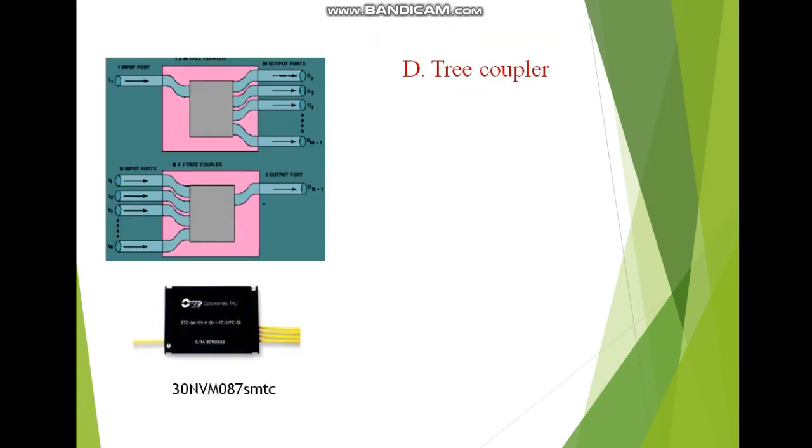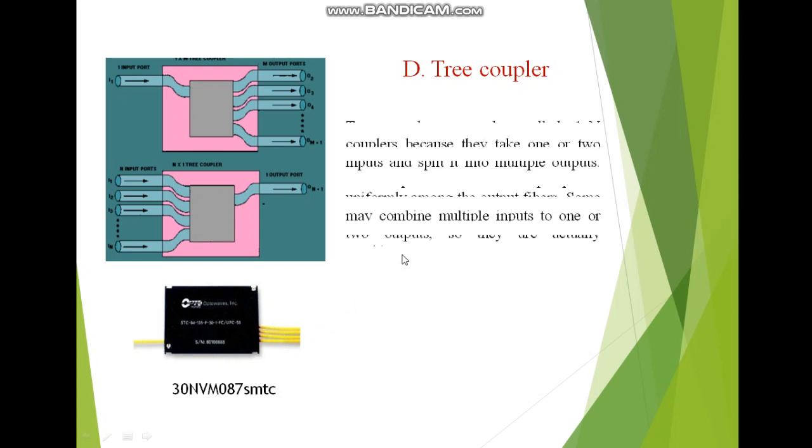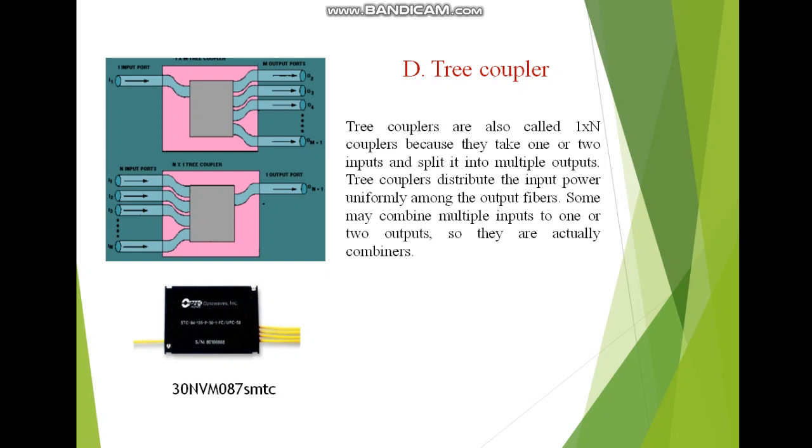Next I will discuss tree coupler. Tree, by the name tree - it's very easy. Tree having input trunk supplying output to all the branches. Here I am having tree coupler diagram having one input port and m number of output ports. Opposite is also possible - this is 1 x n tree coupler and this is n x 1 tree coupler. Tree couplers are also called 1 x n couplers because they take one or two inputs and split it into multiple outputs. Tree couplers distribute the input power uniformly among the output fibers. Some may combine multiple inputs to one or two outputs.